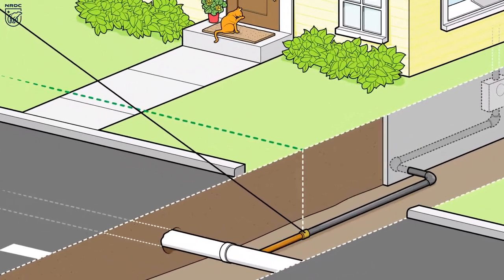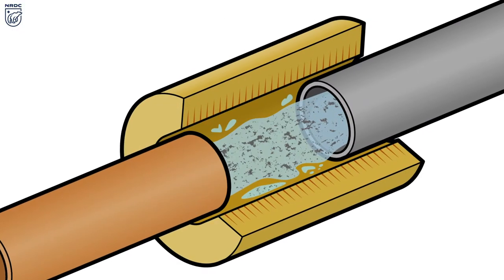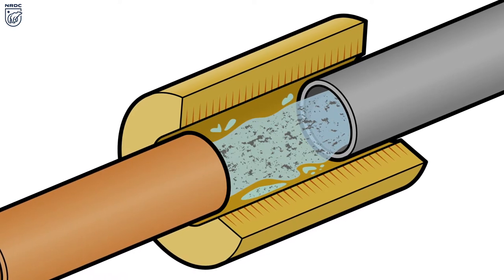Some cities or utilities actually only replace a portion of the lead pipe that runs from the water main to the curb in front of your house, or they may leave in the connectors that contain lead.